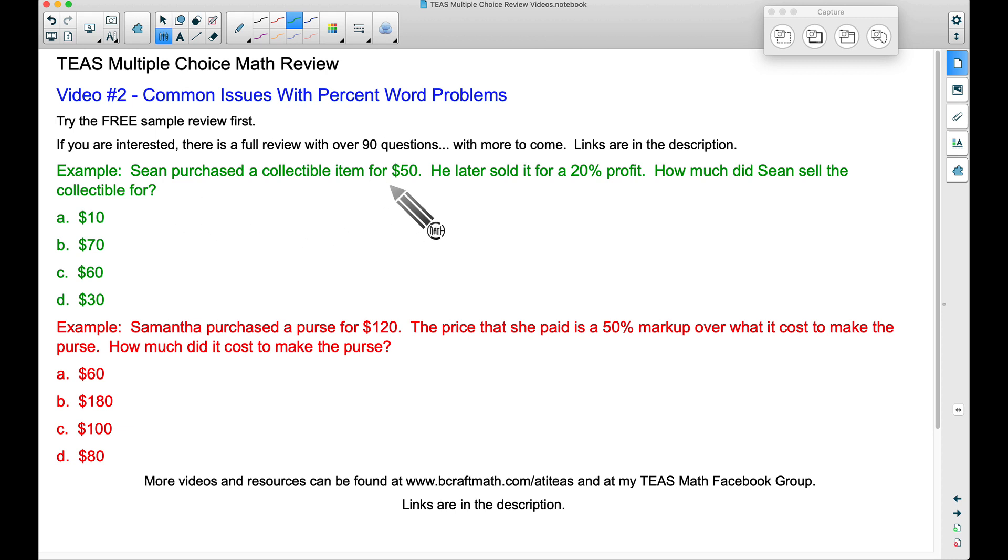Well he paid 50 bucks for it and then he's going to make a 20% profit so he's going to sell it for more than what he paid for it. So automatically I'm going to eliminate A and D because if he sold it for $10 or $30 he's losing money and he did not make a profit.